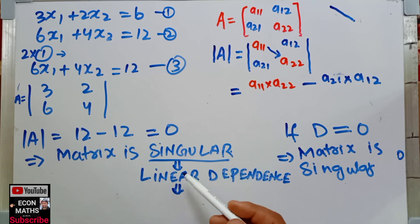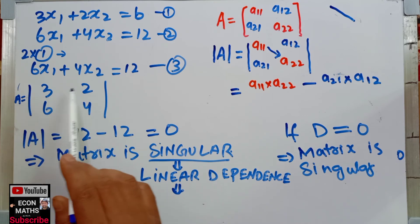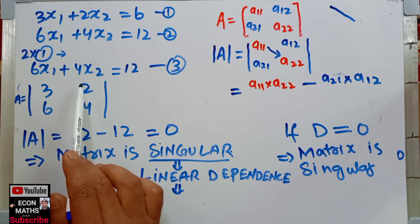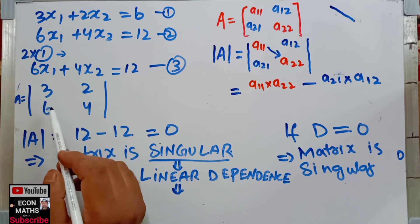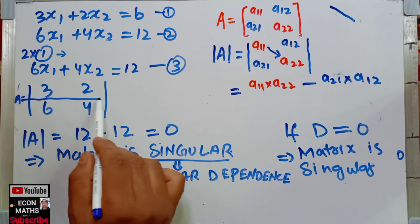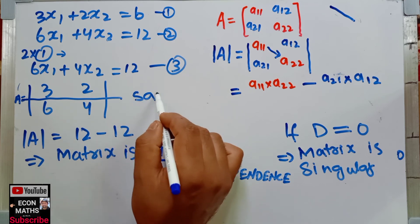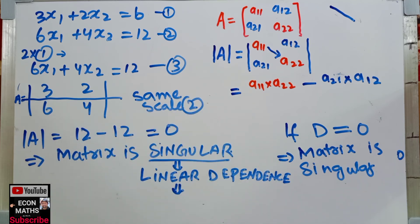In summary: the second row scaled up by a factor of 2 from the first row — 3 twos are 6, 2 twos are 4 — confirms the same scaling factor, so there is linear dependence. This was all about determinants and singularity.